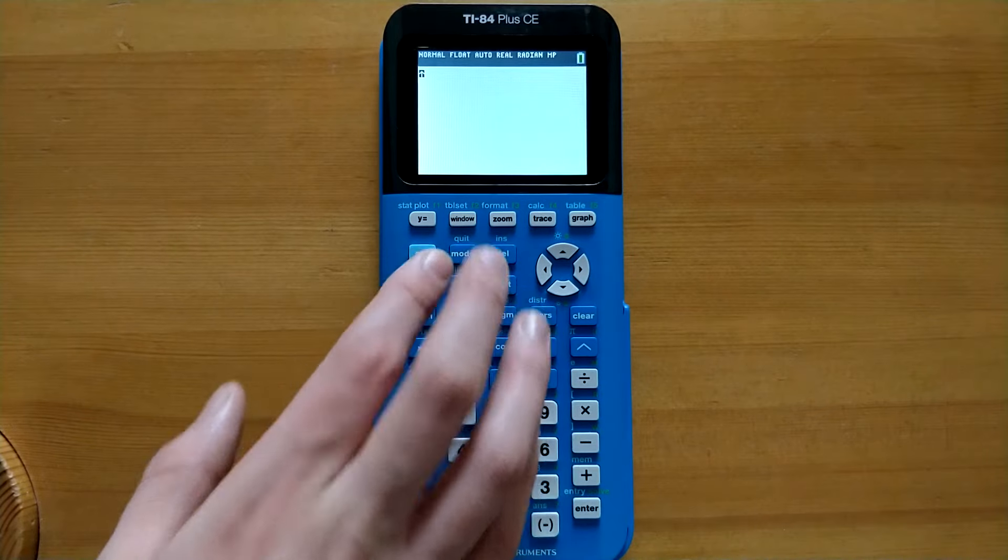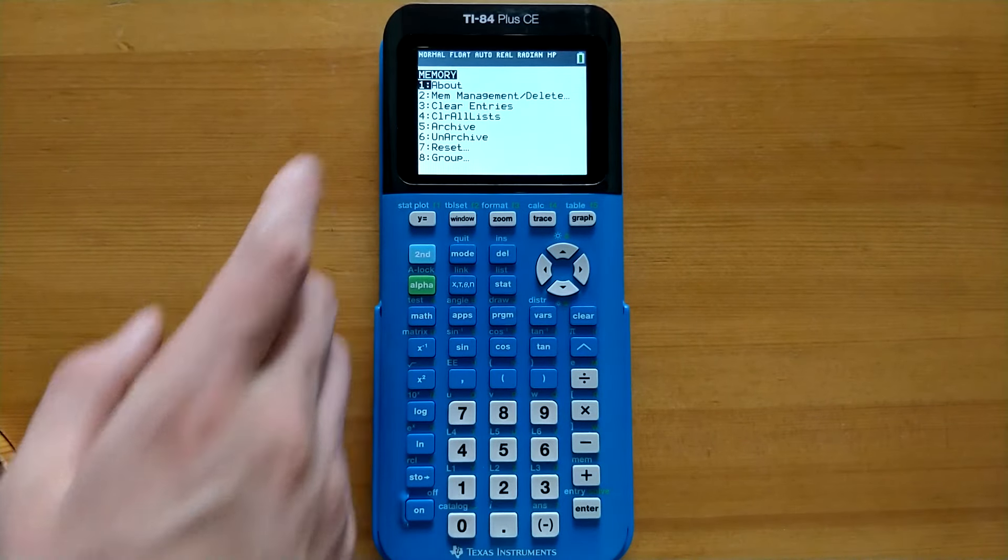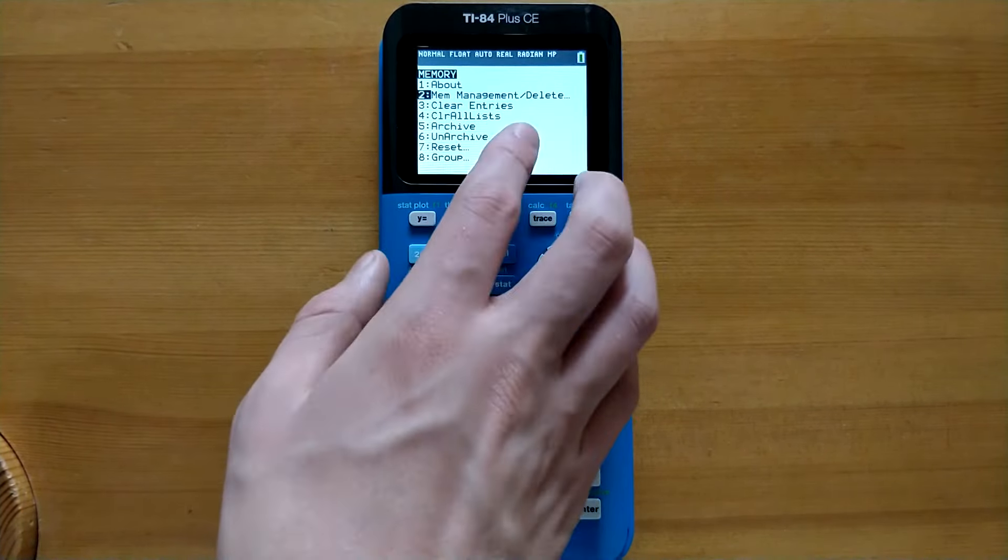So let's go to 2nd+, which will bring us to the memory menu. From here, select 2, which is memory management and delete, and then select all.